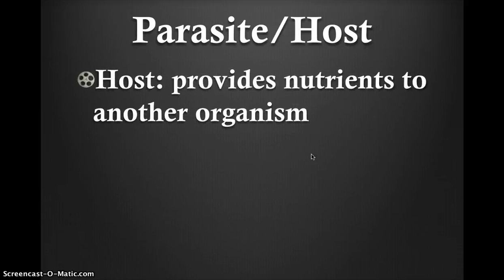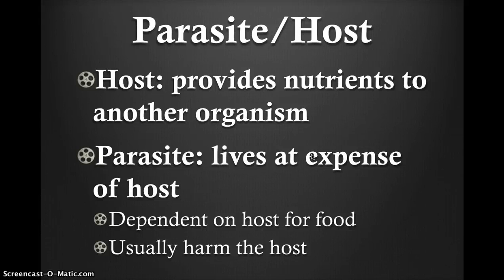A parasitic relationship is one in which one organism, the parasite, lives off another organism, the host, harming it and possibly causing death. The parasite lives on or in the body of the host for food or nutrition. A few examples of parasites are tapeworms, fleas, and barnacles. Although parasites harm their host, it is in the parasite's best interest not to kill the host, because it relies on the host's body functions such as digestion or blood circulation to live. A parasite and its host evolve together; hosts also develop ways of getting rid of parasites, such as scratching away ticks or building symbiotic relationships with other organisms.